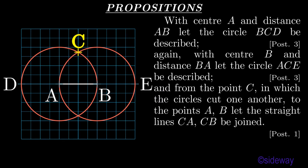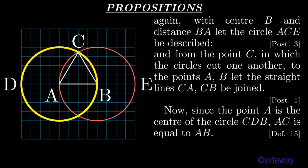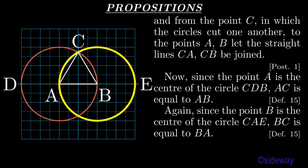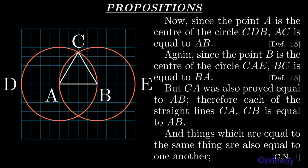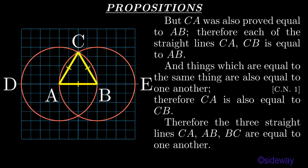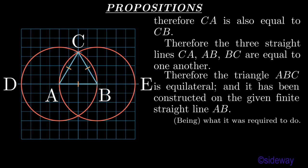And from the point C, in which the circles cut one another, to the points A and B, let the straight lines CA and CB be joined, by Book 1 Postulate 1. Now, since the point A is the center of the circle CDB, AC is equal to AB, by Book 1 Definition 15. Again, since the point B is the center of the circle CAE, BC is equal to BA, by Book 1 Definition 15. But CA was also proved equal to AB; therefore each of the straight lines CA and CB is equal to AB. And things which are equal to the same thing are also equal to one another, by Book 1 Common Notion 1. Therefore CA is also equal to CB. Therefore the three straight lines CA, AB, BC are equal to one another. Therefore the triangle ABC is equilateral, and it has been constructed on the given finite straight line AB. Being what it was required to do.